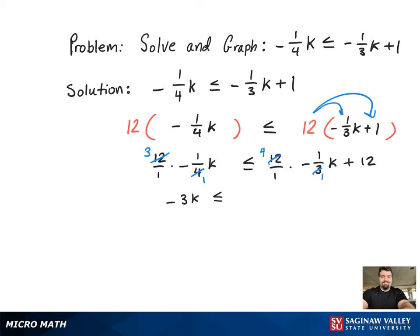Now that the fractions have been eliminated, all that's left to do is just get the constants to one side, variables to the other. And that's why we're going to add 4k to get all the variables to the left-hand side.